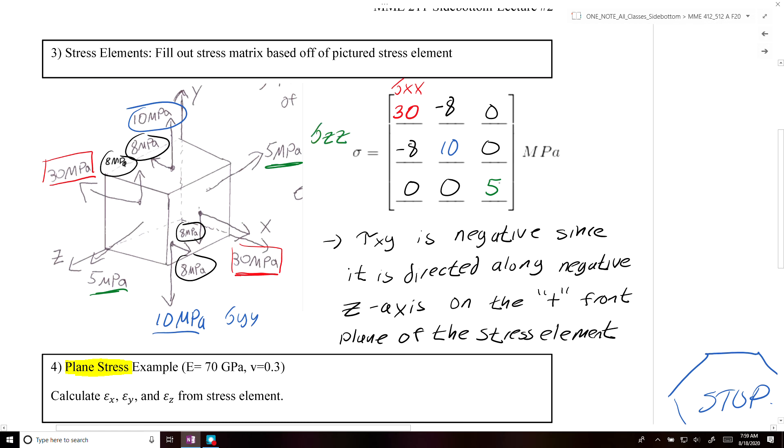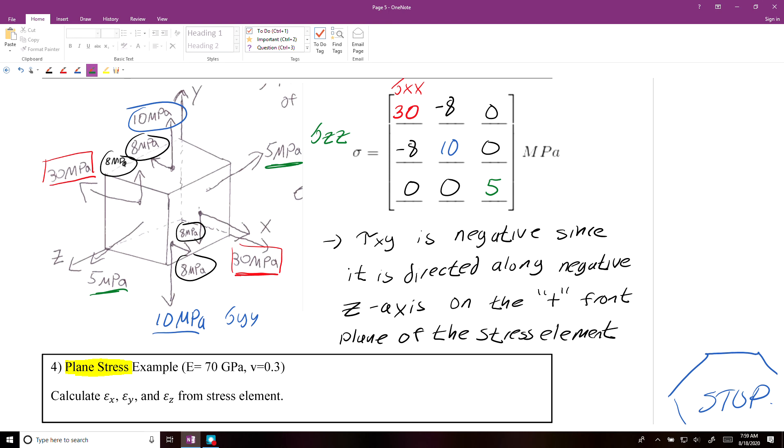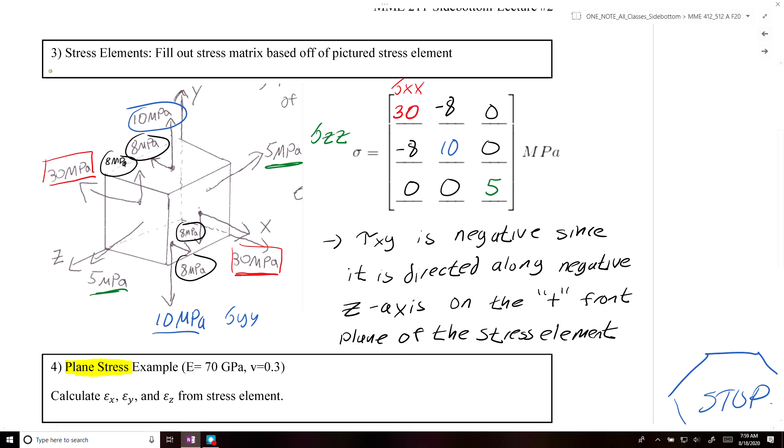And then you had to identify any of the shear stresses. So there's four shear vectors that are drawn. We have this vector here would be tau xy. But since it's going along the negative axis, it's going to be negative in magnitude.